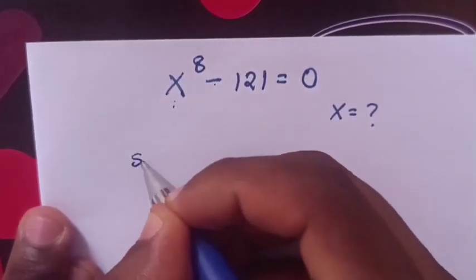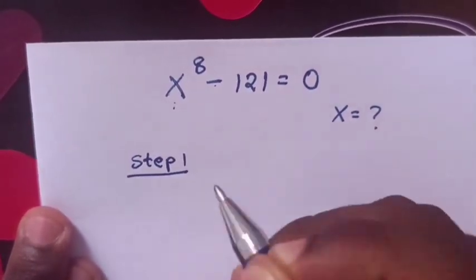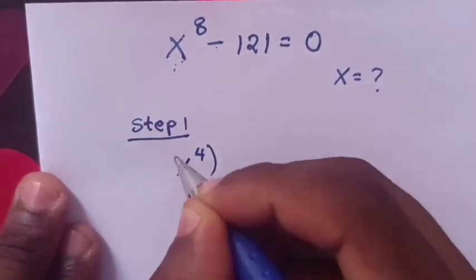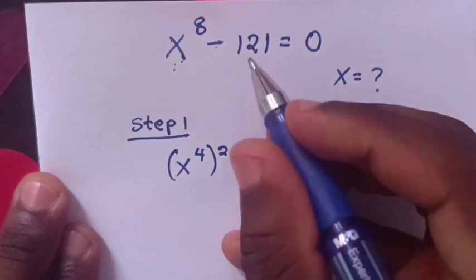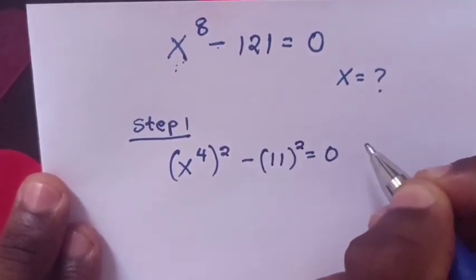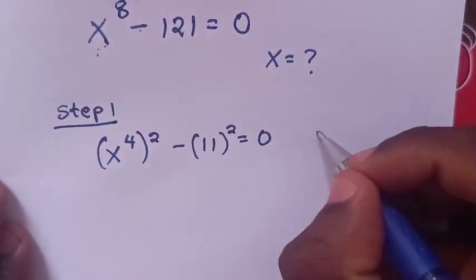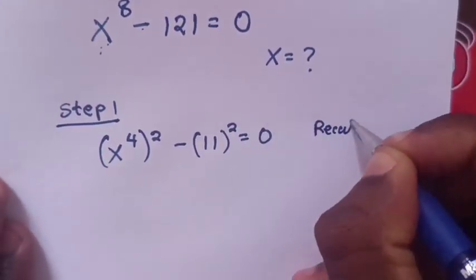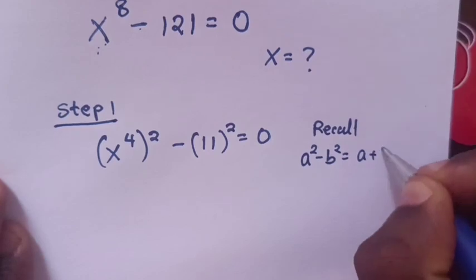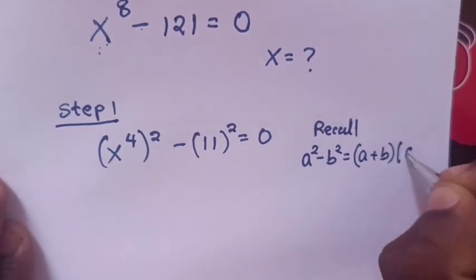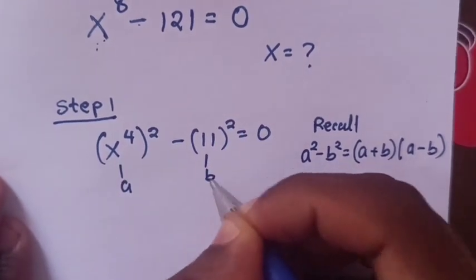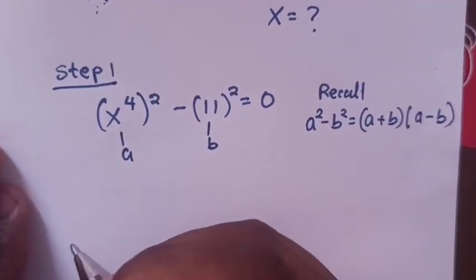Step 1. x power 8 is the same as (x power 4) squared, and 121 is the same as 11 squared, so this equals 0. This equation is in the form of the rule a squared minus b squared equals (a plus b)(a minus b), where a is x power 4 and b is 11.